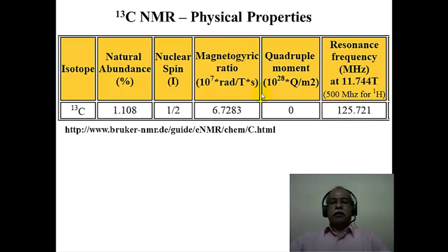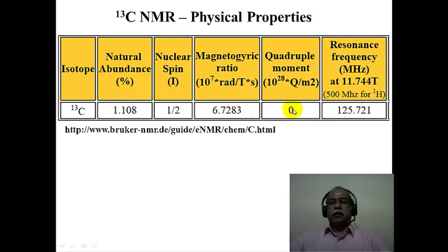This table gives some important properties of the carbon-13 isotope. Carbon-13 is a low abundant nucleus — only about 1.1 percent of the carbon content available on earth's crust. The nuclear spin is half, just like proton. The gyromagnetic ratio is about one-fourth of the gyromagnetic ratio of proton. It does not have any quadrupole moment. Therefore, the resonating frequency is also about one-fourth of the proton resonance frequency — for example, if proton resonates at 500 MHz, carbon-13 resonates at about 125 MHz under the same magnetic field of 11.7 tesla.